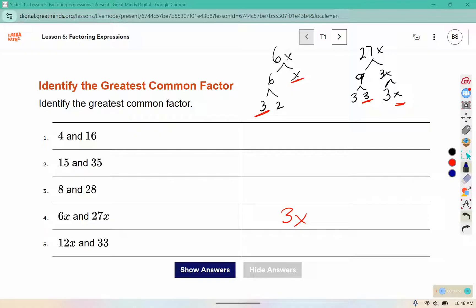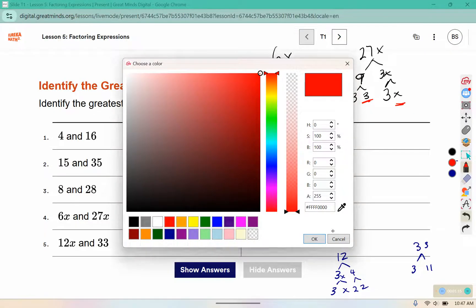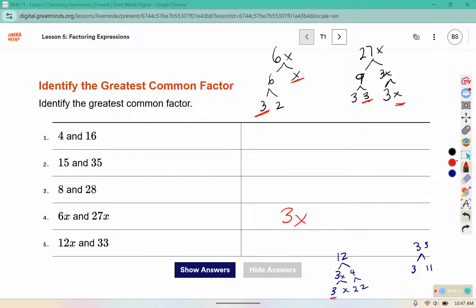For 12x, we can split that up into 3x and 4. 3x can be split into 3 and x, and 4 can be split into 2 times 2. 33 can be split into 3 times 11. So at the ends of the branch, the only thing they have in common is a 3.